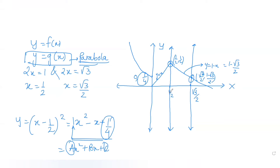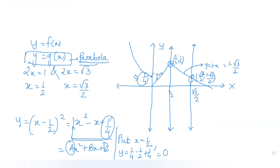Let's evaluate g(x) at x = 1/2 and x = √3/2, since we need the area between the two lines. Putting x = 1/2: y = (1/2)² - 1/2 + 1/4 = 1/4 - 1/2 + 1/4 = 0. So the parabola intersects the x-axis at the point (1/2, 0).